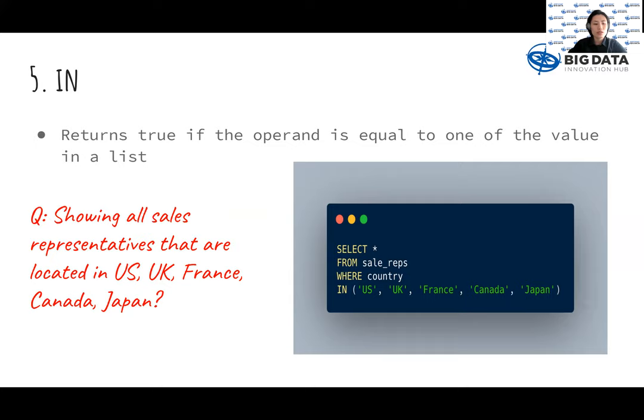Fifth, the use of IN returns true if the operand is equal to one of the values in a list. In the example, by specifying US, UK, France, Canada, and Japan in the bracket, we can get all sales representatives data that are located in those countries.